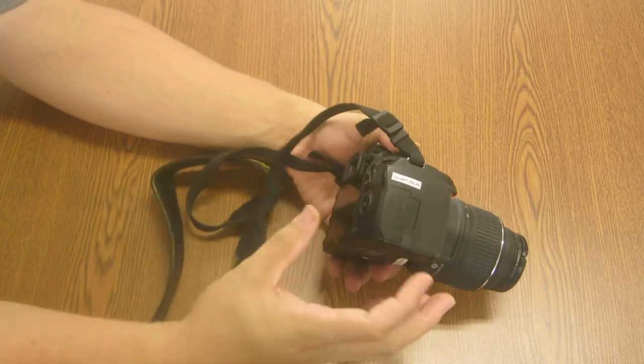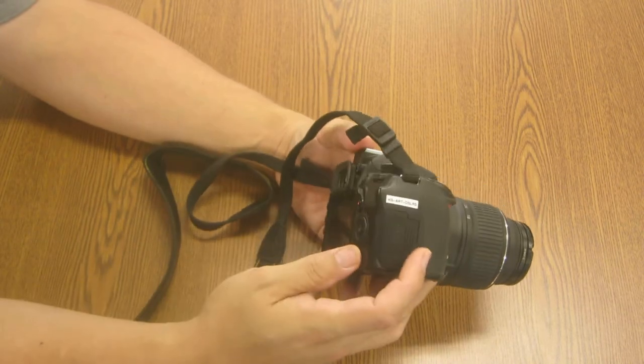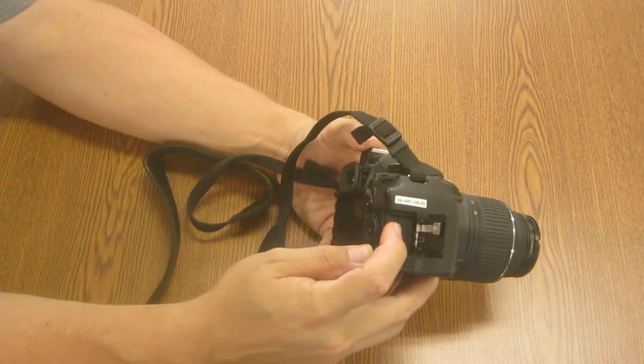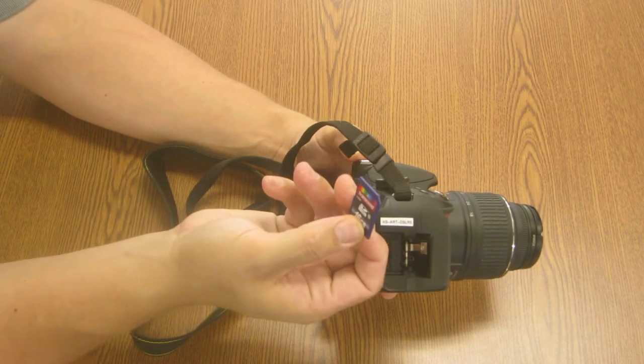To remove the SD card to put your own in or to take mine out, on the side of the camera here, simply push and slide on that door. It'll spring open for you. Push on the SD card and it ejects right out.